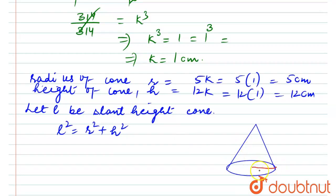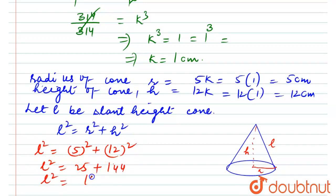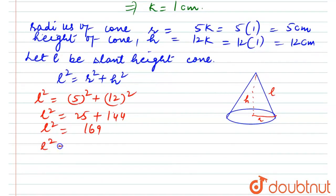So in the diagram, the radius r = 5, height h = 12, and slant height l. Therefore: l² = 5² + 12² = 25 + 144 = 169. Since 169 = 13², we get l = 13 cm.